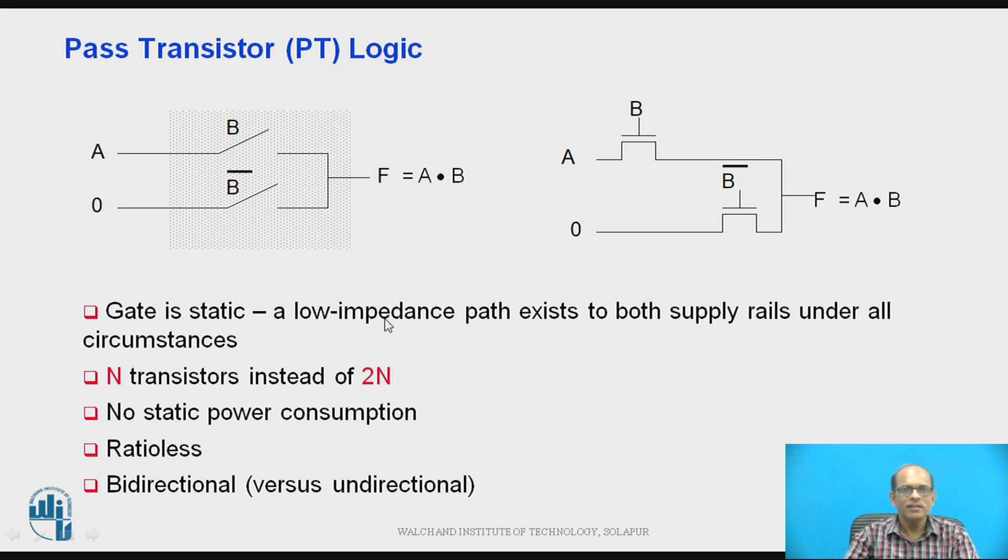So gate is static. A low impedance path exists both to the supply or ground under all circumstances. For the pass transistor logic, N transistors are required instead of 2N. No static power consumption. It is ratio-less and it is bidirectional.